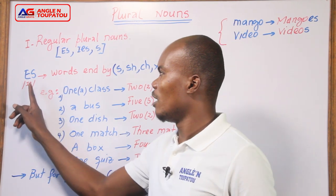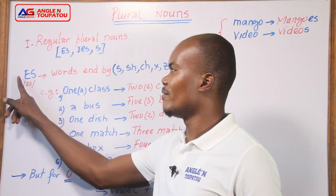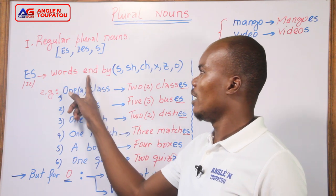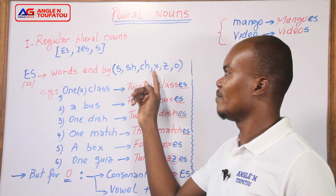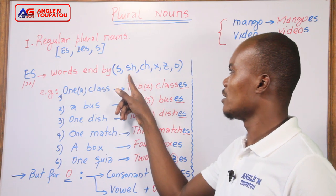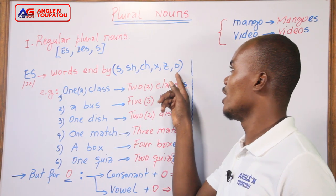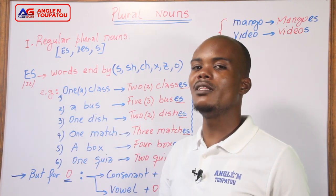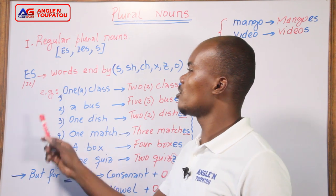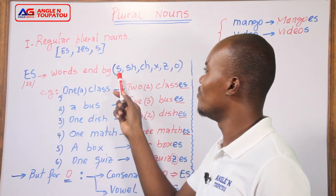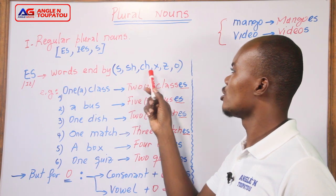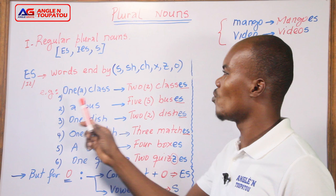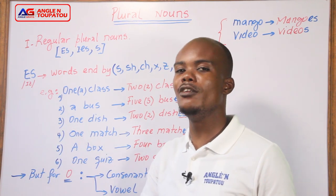Let's get started with ES. When a word ends by one of these letters — S, SH, CH, X, Z, or O — you add ES to form the plural of the noun. Mwen di ke loskou mou termine pa S, SH, CH, X, Z, ou O — donk wap ajoute ES pou forme pluriel non sa.